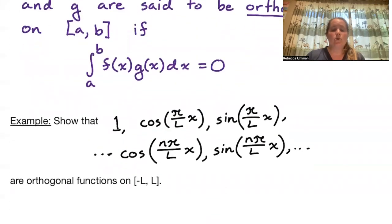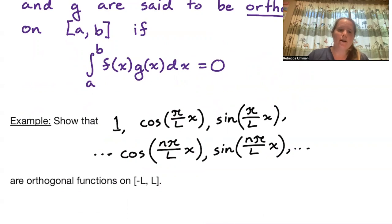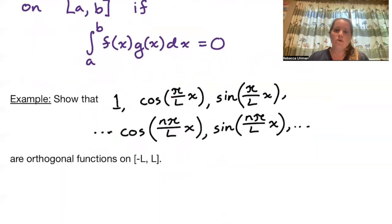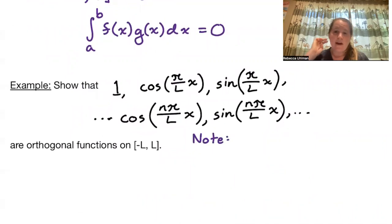We are going to show that the functions 1, cos(nπx/l), and sin(nπx/l) — where n ranges through all of the positive integers — are orthogonal functions on the interval [−l, l]. Just a quick note: these are precisely the eigenfunctions for that last case of boundary value problems.